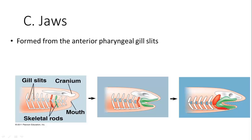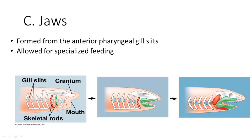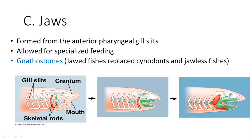Jaws formed from the anterior pharyngeal gill slits — these became jaws developmentally. They allowed for specialized feeding, including teeth, and so allowed for predation. Most fish use their jaws not only for catching other organisms but also for herbivorous feeding as well. The gnathostomes are the group of jawed fishes which replaced the cynodonts and jawless fishes in the fossil record.